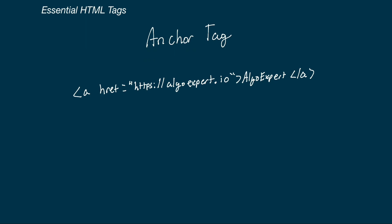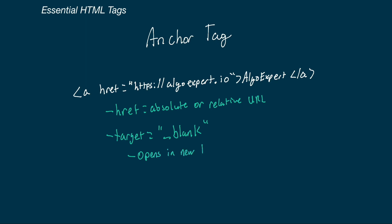The anchor tag (A) is how we make hyperlinks — the hypertext portion of HTML. It allows us to link to other documents on the web or other places in the same document. We use the A tag with the href attribute (HREF) which contains the link — either absolute or relative. For example, href of 'algoexpert.io' with the text 'AlgoExpert' inside would navigate to that URL when clicked. Additionally, we can add a target attribute — setting target to underscore blank will open the link in a new tab or window depending on the user's browser preference.